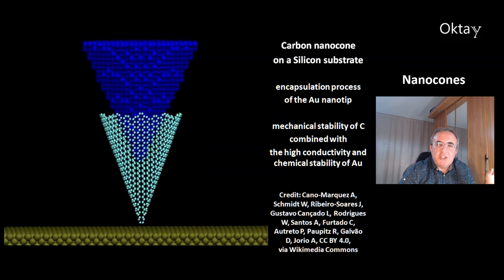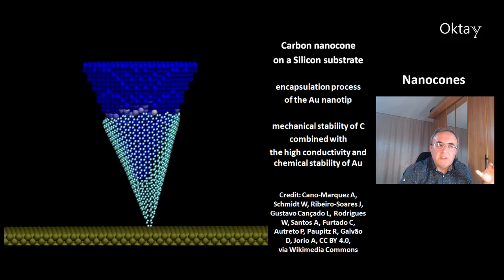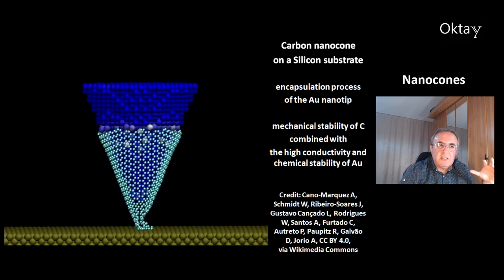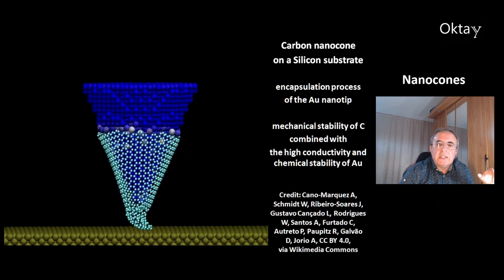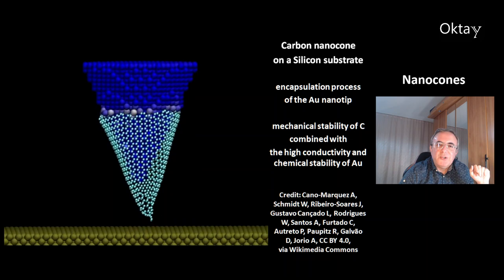This is an animation of the carbon nanocone on a silicon substrate, showing the encapsulation process of the gold nanotip, which is shown here in dark blue. This combination of the mechanical stability of the carbon nanocone with the high conductivity and chemical stability of the gold atoms gives the optimum nanocone.